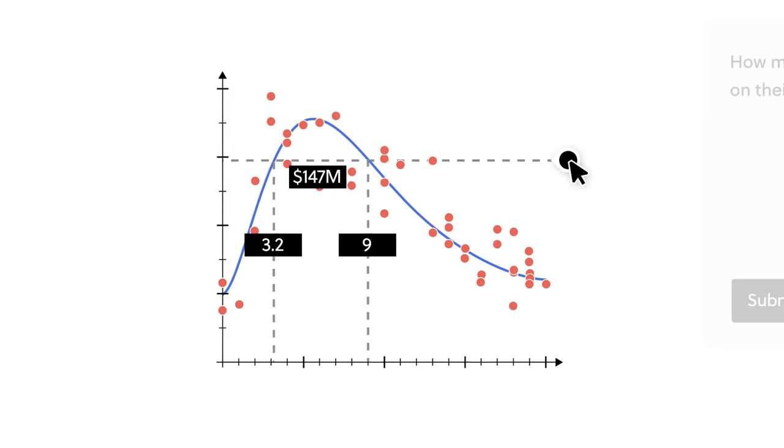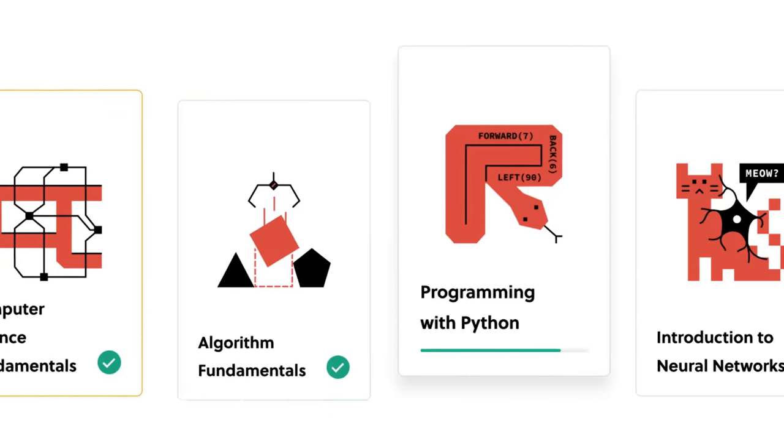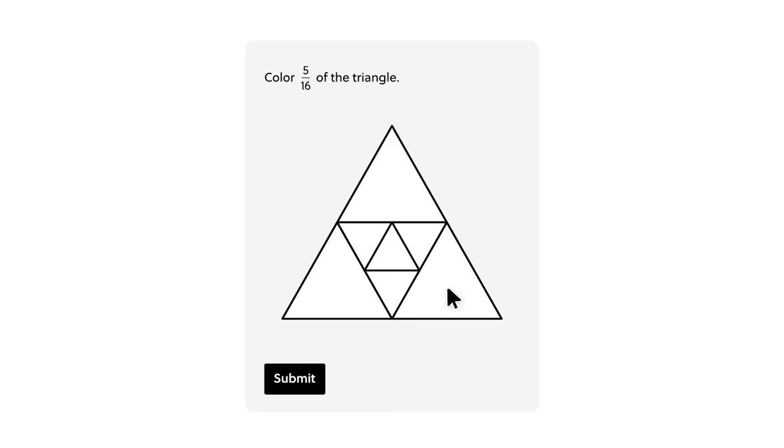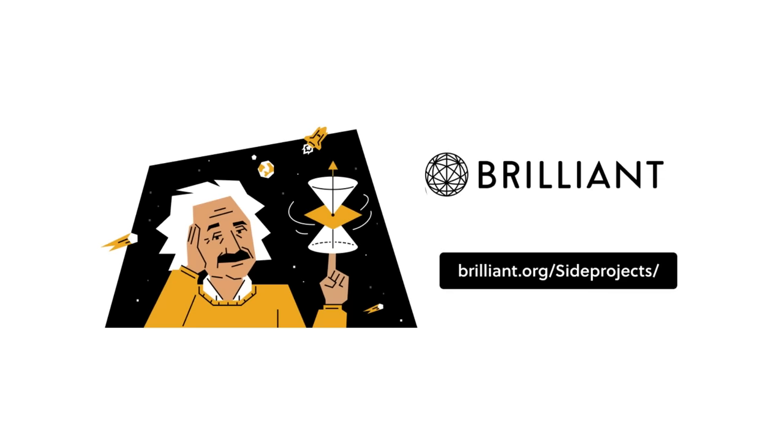I want you to join me in exploring Brilliant's course Data Structures and Algorithms. This course will help you unlock the secrets of efficient problem solving, discover how to optimize code, tackle complex algorithms, and think like a computer scientist. Go to brilliant.org/sideprojects or click the link below and you'll get a free 30-day trial. The first 200 people will also get 20% off Brilliant's annual premium subscription.